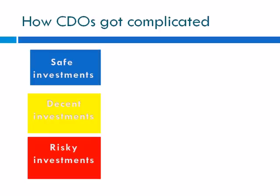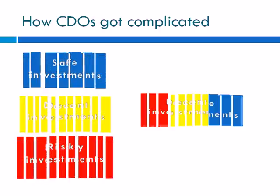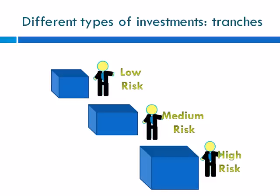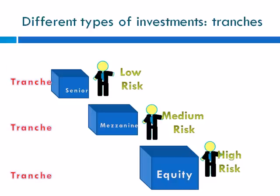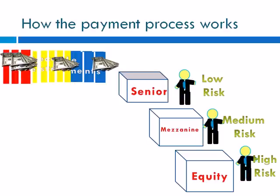Here's how CDOs got complicated: they were sliced up into little pieces and then parts of them were pooled together to form a collateralized debt obligation. There were three different types of investors and each was put into a different category. Low-risk investors paid the least amount of money and were put in the senior tranche. Middle-range investors were put in the mezzanine category for medium risk. Finally, equity investors — groups such as hedge funds — were put in the high-risk category. These groups are called tranches, a French word for slice, though you should think of a tranche more like a container used to collect cash payments.